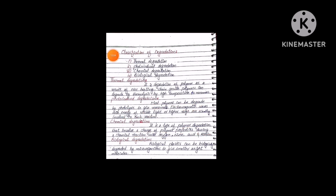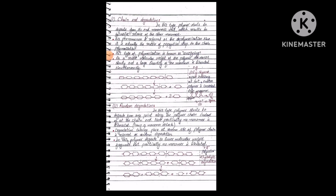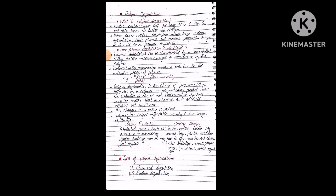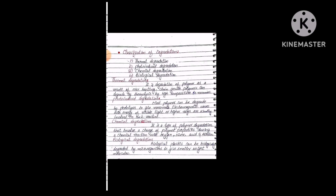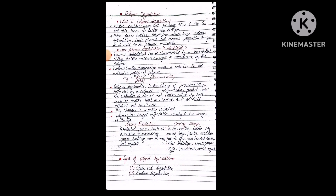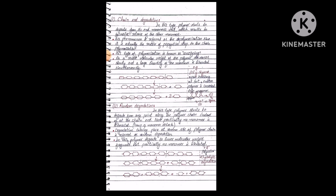These are the important long-answer questions an examiner may ask: what is polymer degradation, how can we identify polymer degradation, what are the classifications of polymer degradation, and what are the types of polymer degradation. Thermal degradation and photo-induced degradation are each separate long questions. This topic must be prepared from a long-answer perspective. It is an interesting and easy-to-understand topic. I hope you enjoyed this lecture — please share your feedback. Thank you.